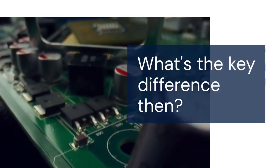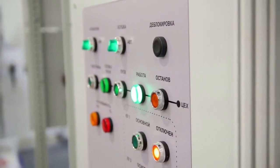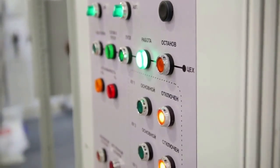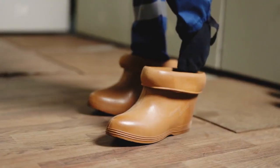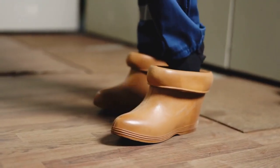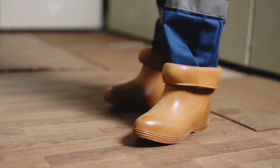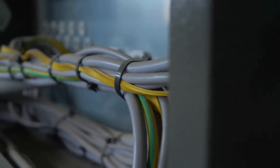The 50-51N relay relies on detecting the imbalance in the neutral conductor. The 50-51G relay directly measures the current flowing to the ground. The 50-51G provides more sensitive and direct ground fault detection, because it is not affected by system imbalances unrelated to ground faults.